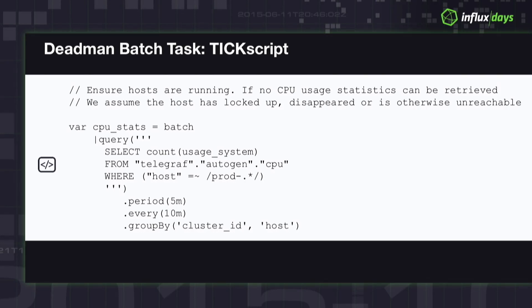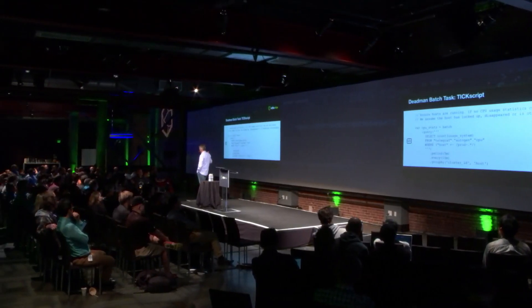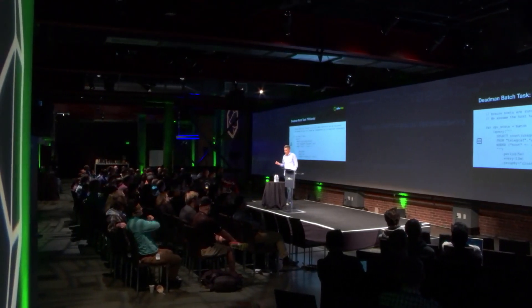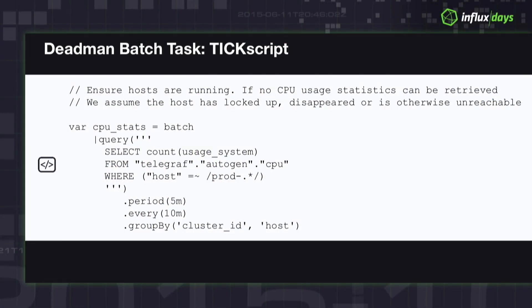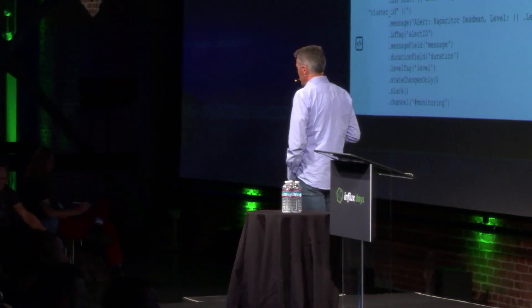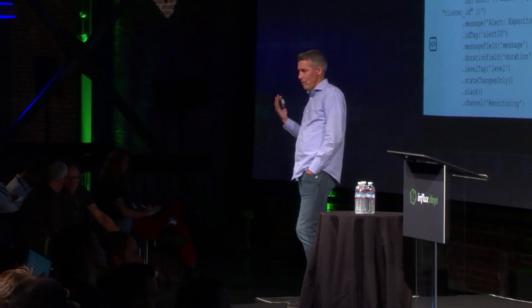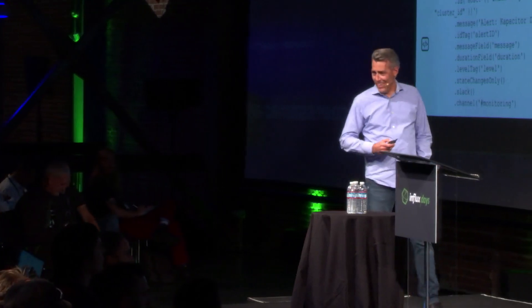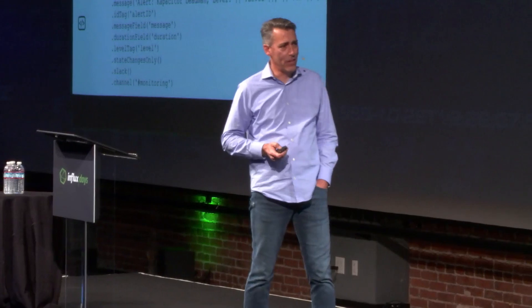Last: the dead man script. If you're not getting metrics, it could be for a wide variety of reasons. This is one of the more popular alert types — you want to know if a node has disappeared. I provided a clear example here for turning this from a streaming task into a batch task. We're counting the CPU usage system stat that comes off the node. If we don't see it, we know we have a problem — the lack of presence of that stat triggers the alert. Looking for a zero over that 10-minute period means the node has disappeared. For those running in cloud service provider environments, nodes can just wink out.